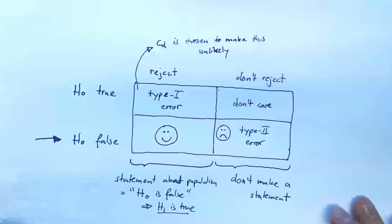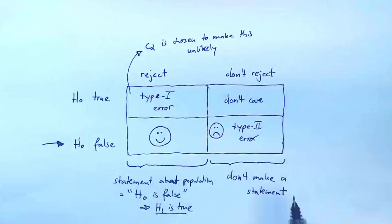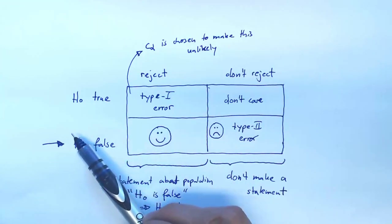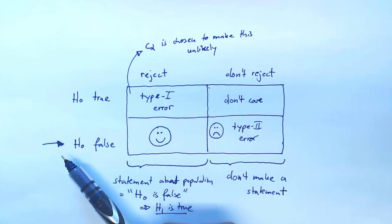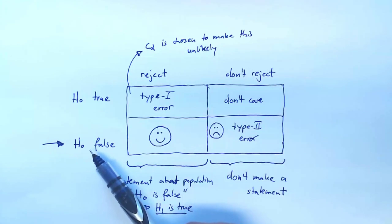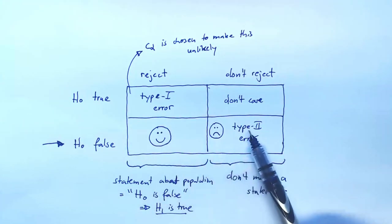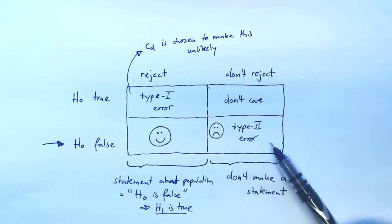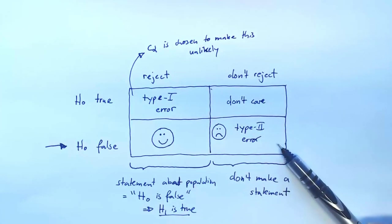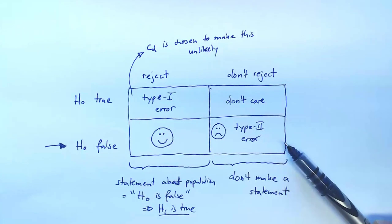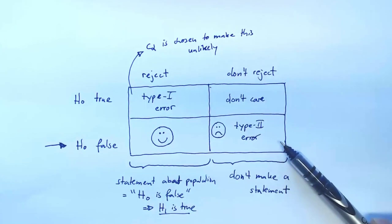Remember this matrix. We are setting up our null hypothesis in a way that we want to reject it. And sometimes we are not able to do that and we end up here. So if we don't reject, we refuse to make a statement. That is, we're not per se making a mistake, we're not saying anything that is wrong, but also we're not being very helpful.